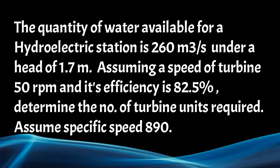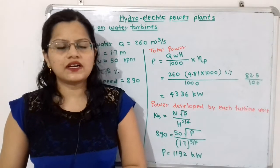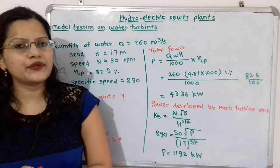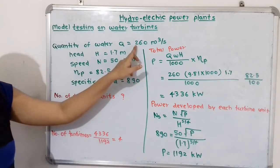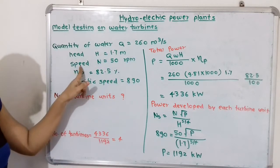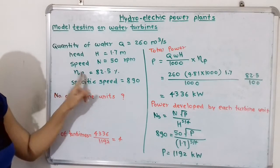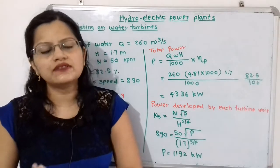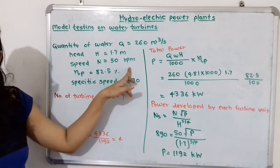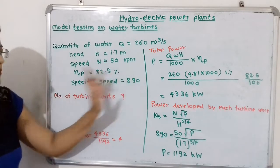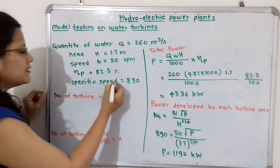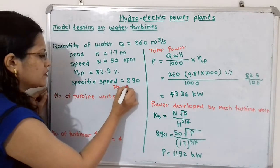Assume a specific speed of 890. Let us first understand the given data. The quantity of water Q is equal to 260 cubic meters per second. Head H is 1.7 meters, speed N is 50 rpm. Efficiency of the prototype, eta_P, is 82.5%, which is 82.5 divided by 100. And specific speed N_S is equal to 890.